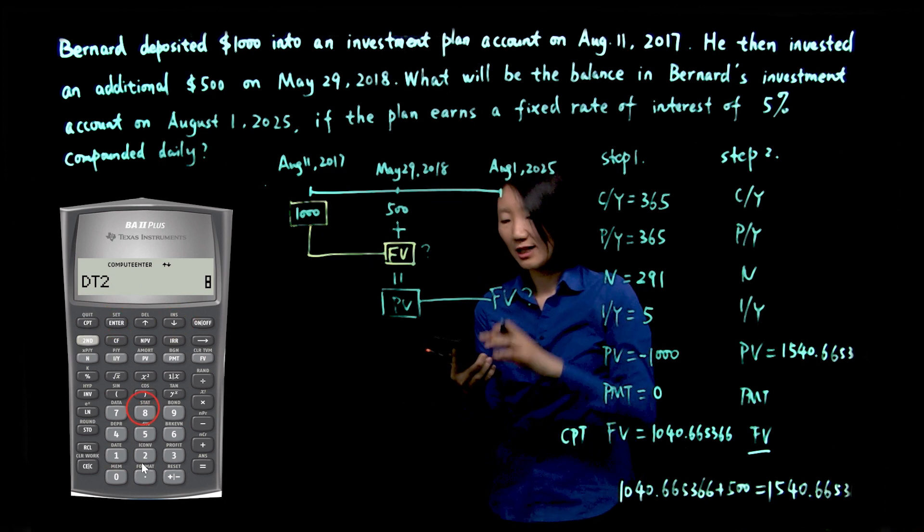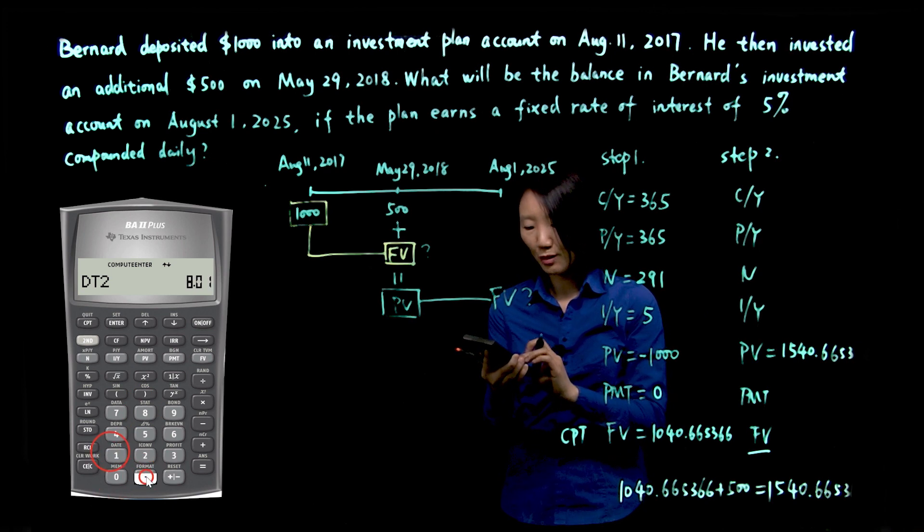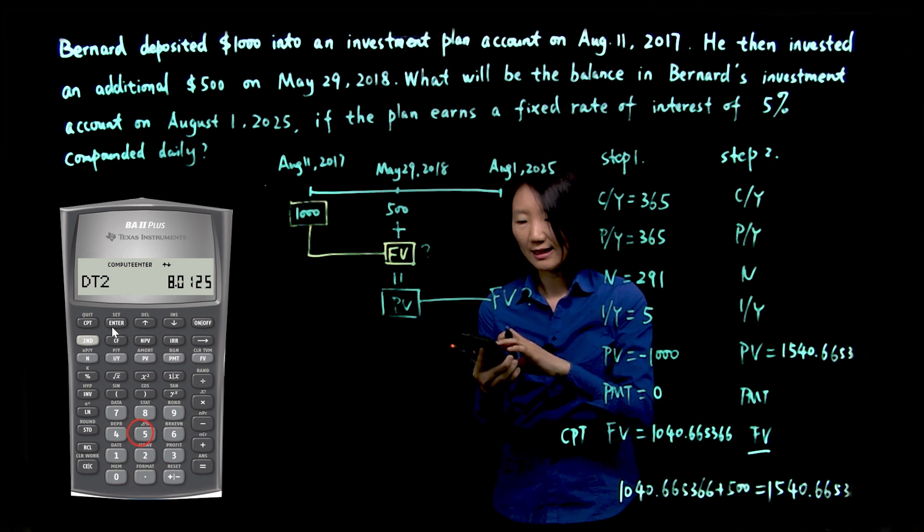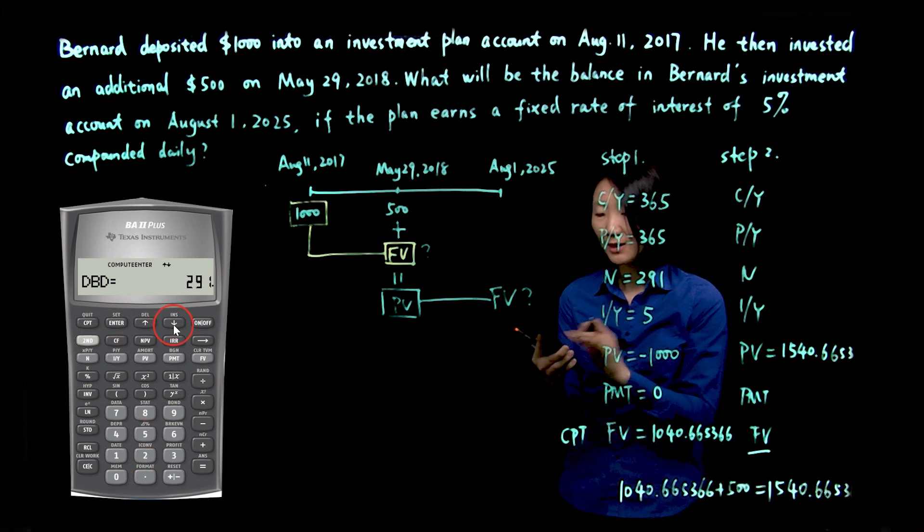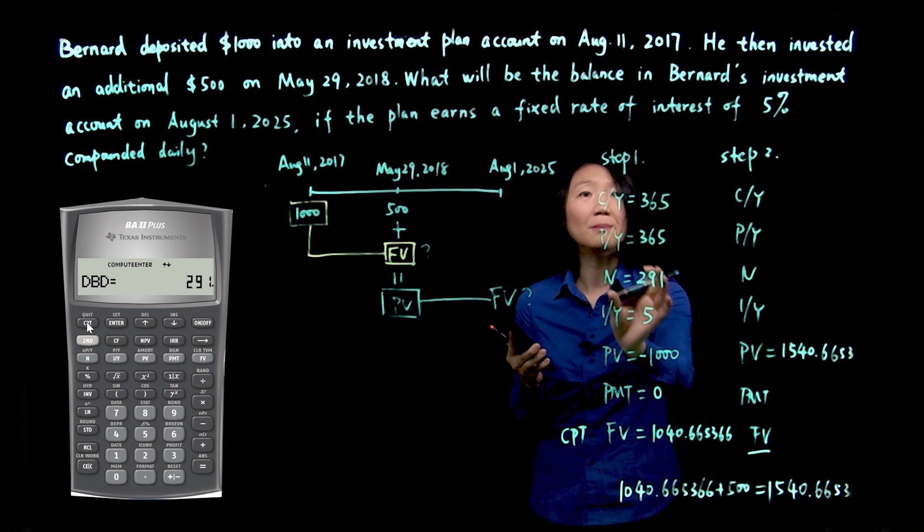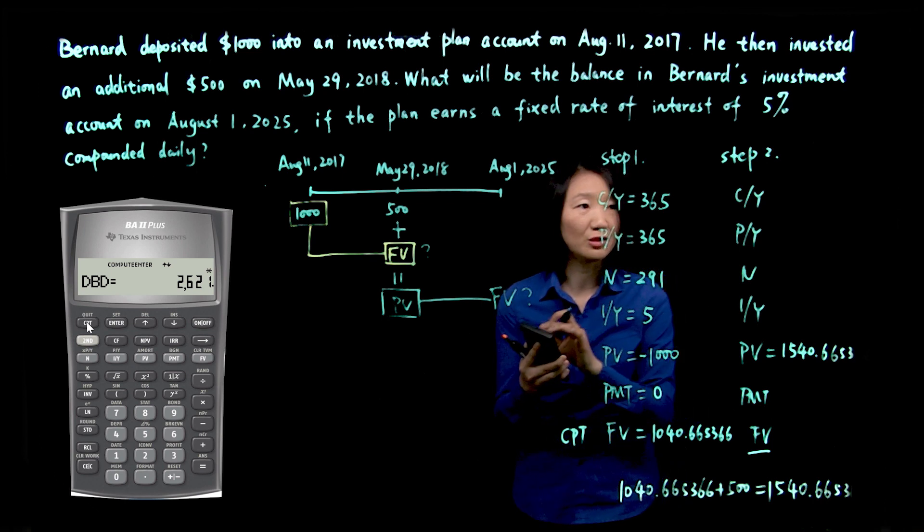Scroll down for day two. Day two is 8.01.25, enter, so that's August 1st, 2025. You scroll down, you see 291, that's from previous calculation. So make sure you push compute to give you the new answer.